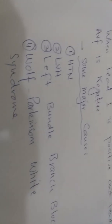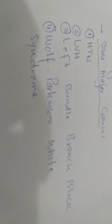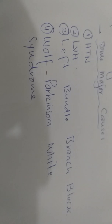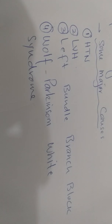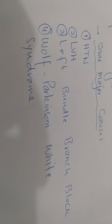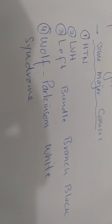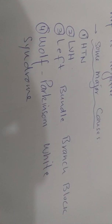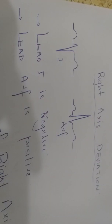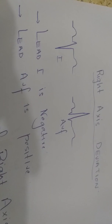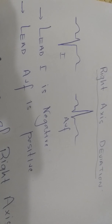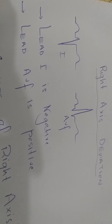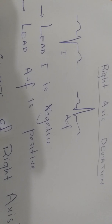Other major causes of left axis deviation include left ventricular hypertrophy, left bundle branch block, Wolff-Parkinson-White syndrome, and anterior wall MI, which most of the time also presents with left axis deviation.